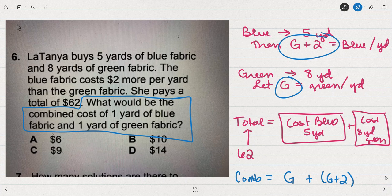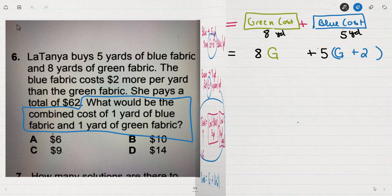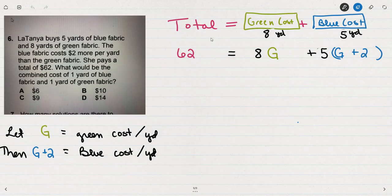Now, the next step is to devise a plan. The plan I'm going to use is writing this equation: the total is the cost for five yards plus the cost for eight yards. And then I'm going to solve that equation and then look back by answering the question.